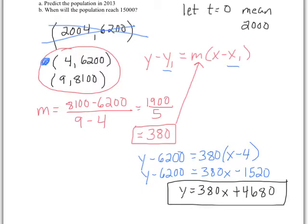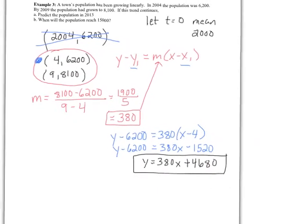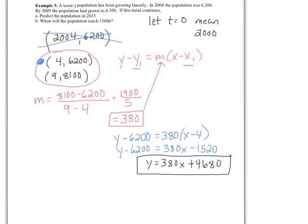So part A is asking us to predict the population in 2013. I'm going to shrink this down so we can see it all. So if we want to predict the population in 2013, what we want to do is put in 13 for our x value. And this should give us our population in 2013, so 380 times 13 plus 4,680 is 9,620. So in the year 2013, we have 9,620 people.